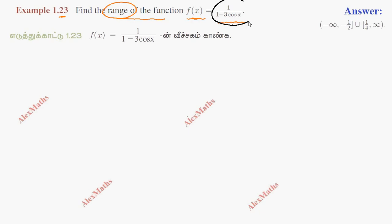Start with one basic term. We have cos x here. The value of cos x ranges from minus 1 to 1.